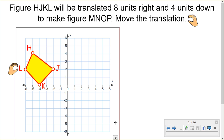Here's our first question. Figure H, J, K, L will be translated 8 units right and 4 units down to make the figure M, N, O, P. So let's perform the translation. Here's our figure right here. We want to translate it 8 units to the right.